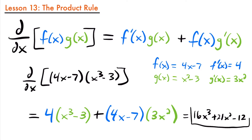That would be the derivative after going through all the simplifications. When you're first learning how to use this rule, it might be helpful to write out what your f of x is, what the derivative of that function is, and then go through g of x and find that derivative, and then just plug them into your rule.